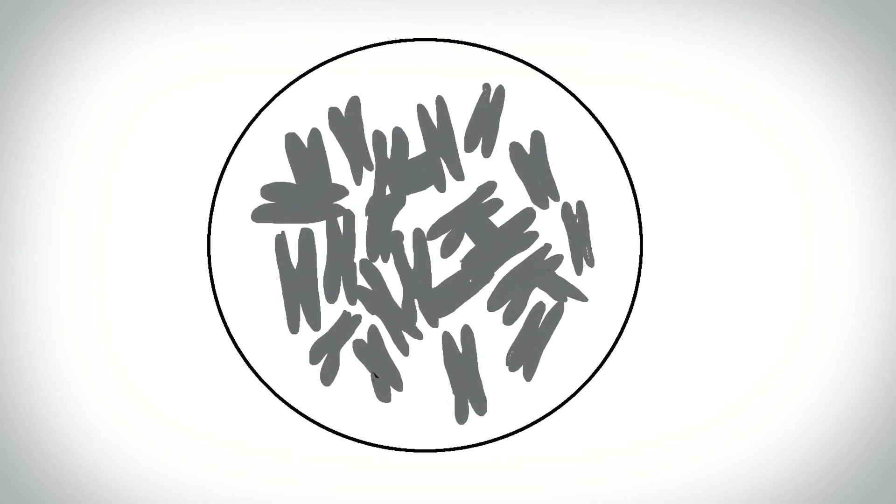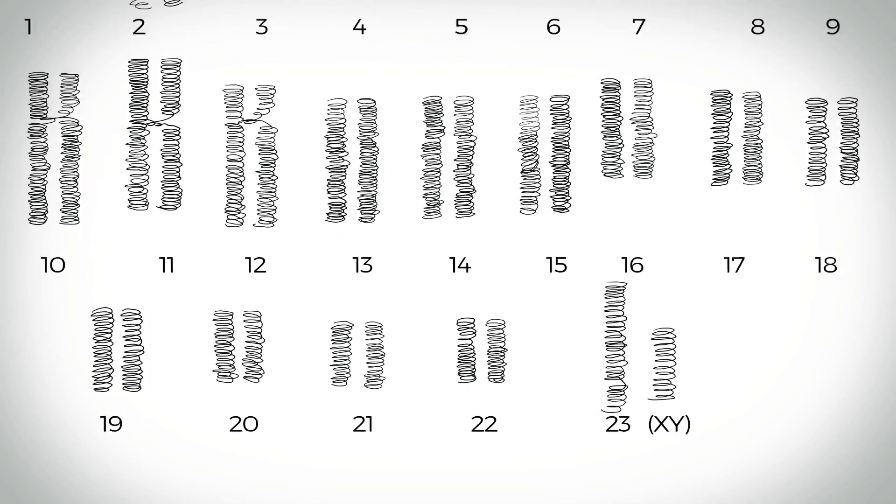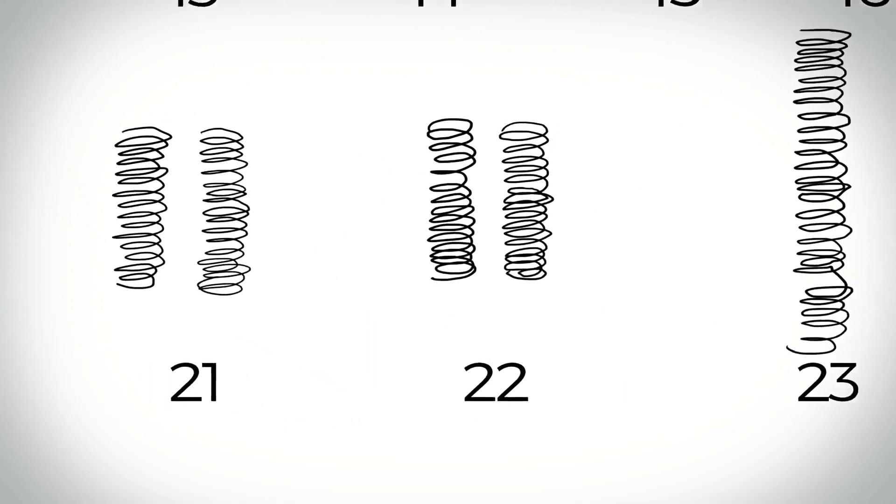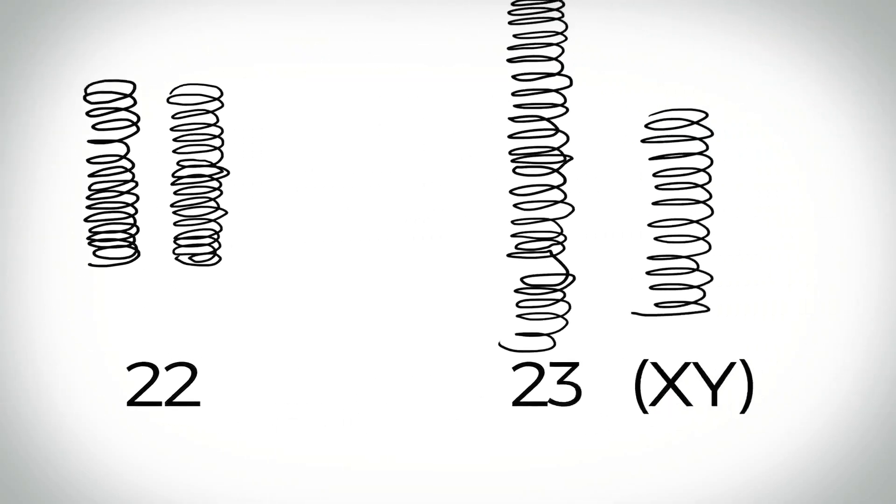In humans, each cell normally contains 23 pairs of chromosomes, for a total of 46. 22 of these pairs, called autosomes, look the same in both males and females.